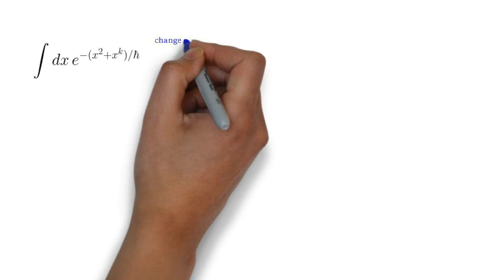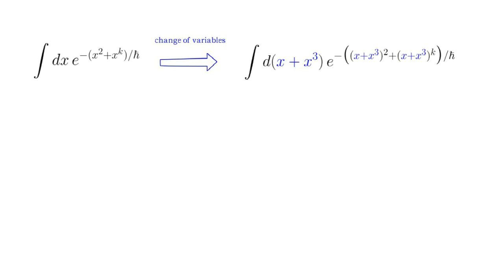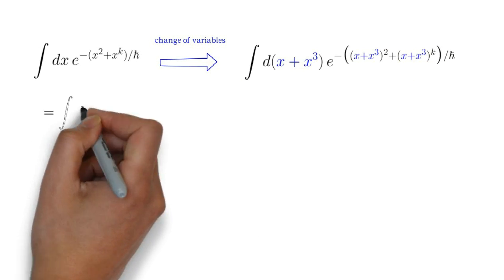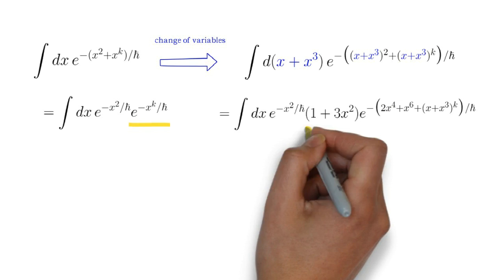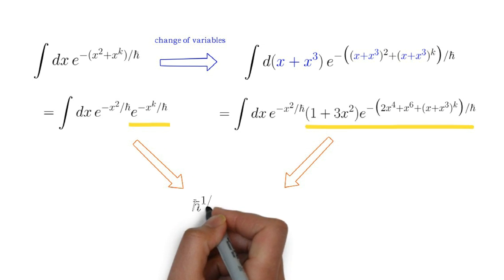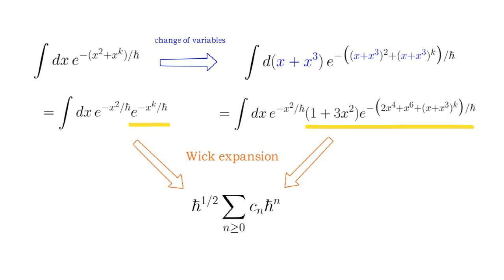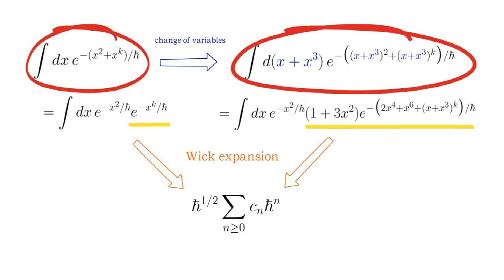For instance, let's do a change of variables in which x is replaced with, say, x plus x cubed. As before, we separate the integrands into an exponential of a quadratic term, and a remaining term that is to be Taylor expanded. The resulting Taylor series will be different for the left and right expressions, but when we apply the Wick rule term by term as before, we obtain identical Wick expansions. The resulting equality of Wick expansions is well defined, even though neither the original integral nor the new integral are convergent.